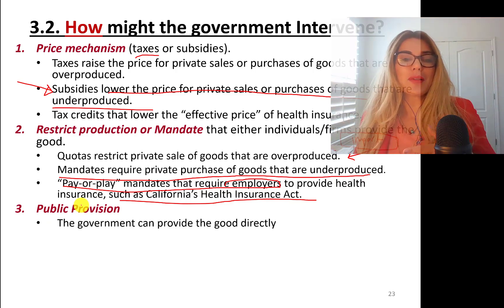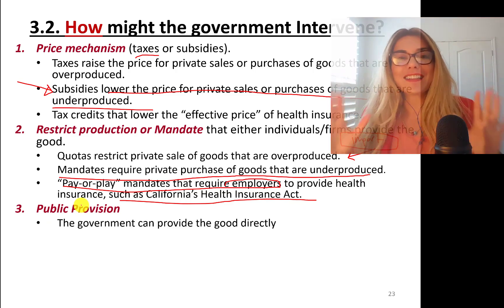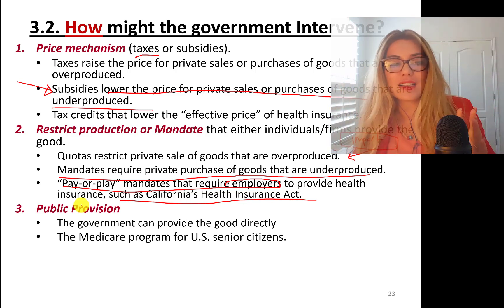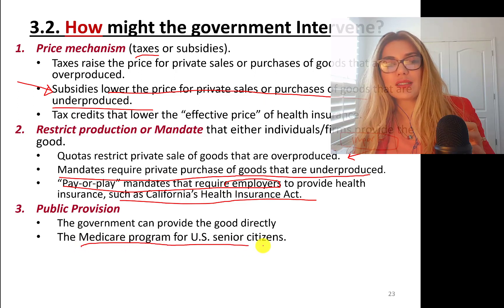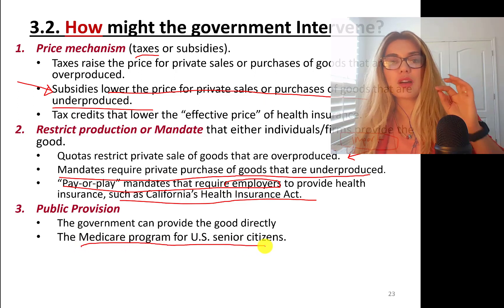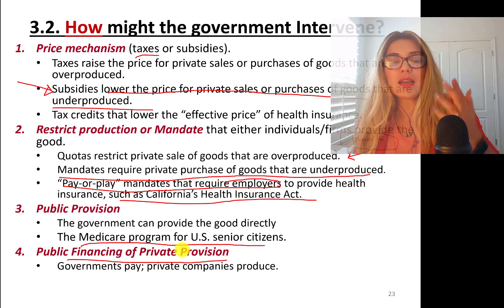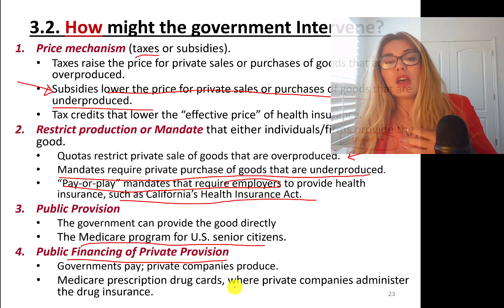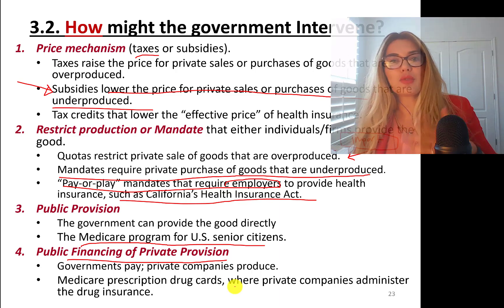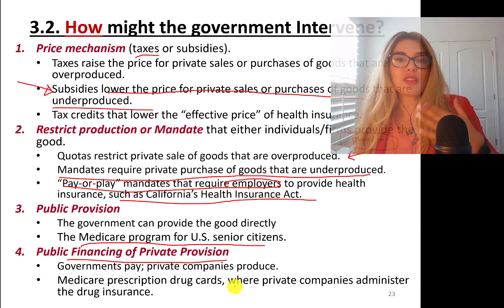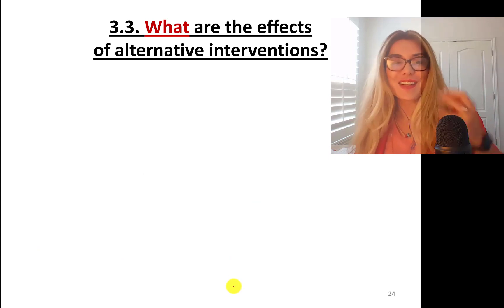Another way government intervenes is public provision — the government directly provides the good or service. For instance, Medicare is the government-provided program for U.S. senior citizens. Another form is public financing with private provision, where governments pay private companies to produce services. Medicare prescription drug cards are an example where companies are hired to provide the service but the government pays for it.